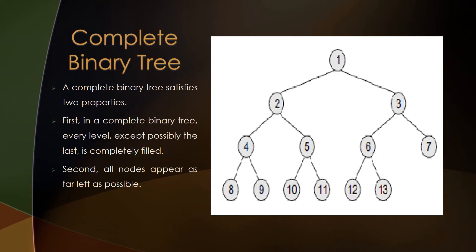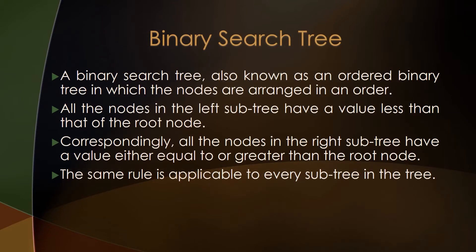Moving on to binary search trees: a binary search tree, also known as an ordered binary tree, is one in which nodes are arranged in order. All nodes in the left subtree have a value less than that of the root node. Correspondingly, all nodes in the right subtree have a value either equal to or greater than the root node.